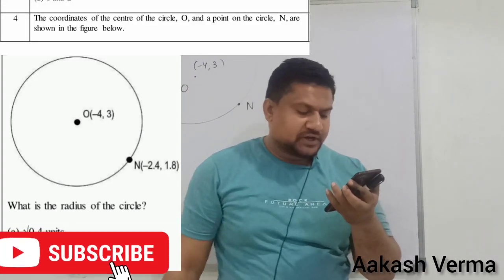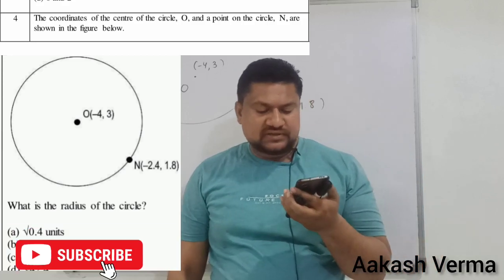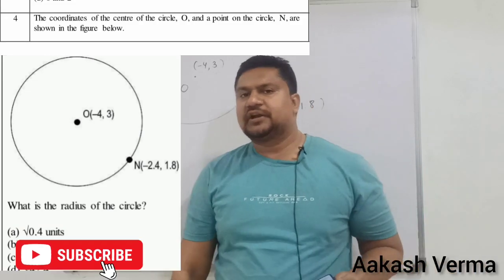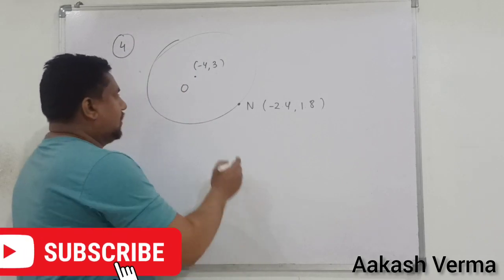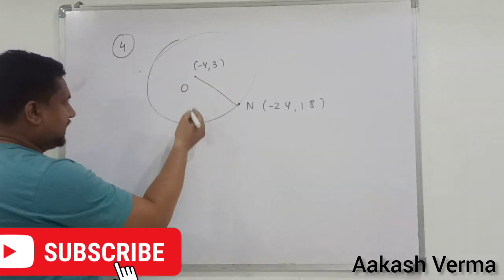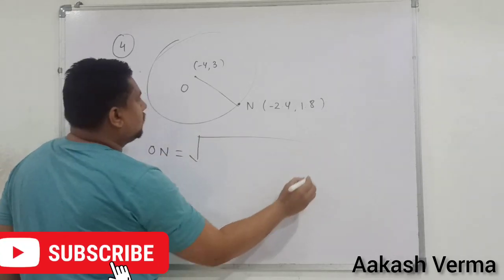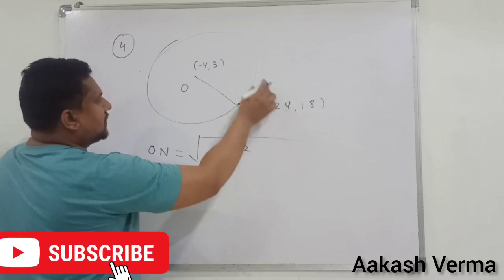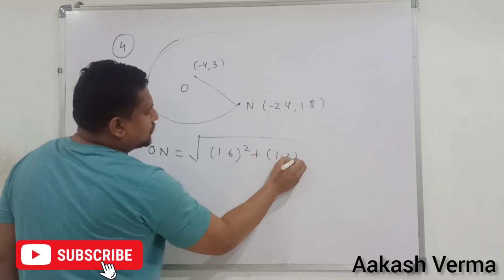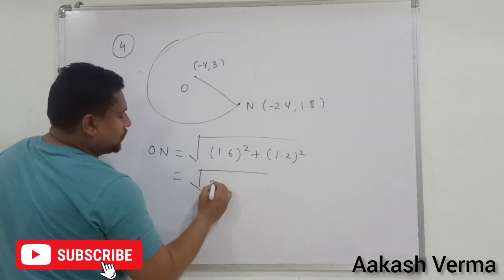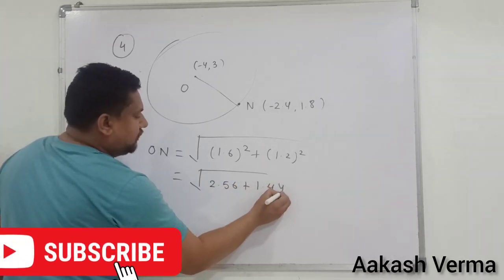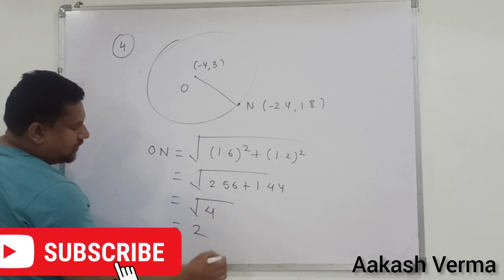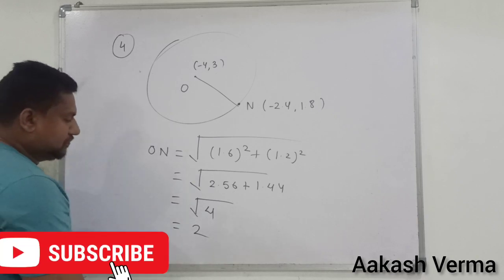Question number 4: the coordinates of center of circle O and a point on the circle N are shown in the figure. What is the radius of the circle? हमें center के coordinate और point on the circle के coordinate दिये हैं, तो distance formula लगाके radius find करेंगे। Square root of (minus 4 plus 2.5 = 1.6)² plus (3 minus 1.8 = 1.2)². 1.6² is 2.56, 1.2² is 1.44; sum is 4, and square root of 4 is 2. Correct option is B — 2 units.